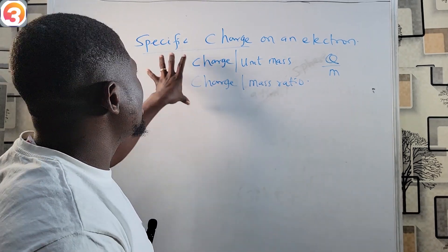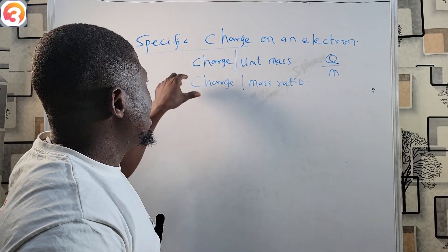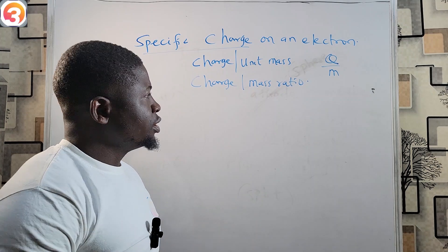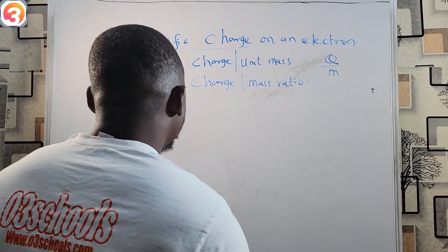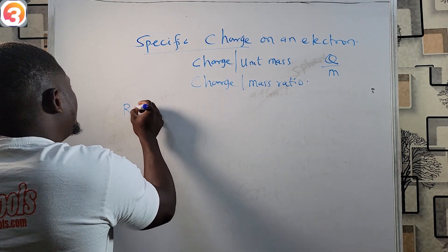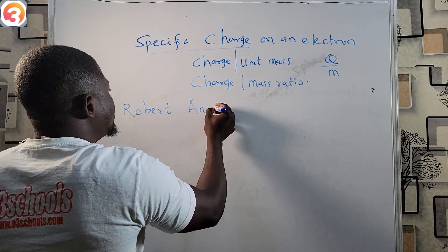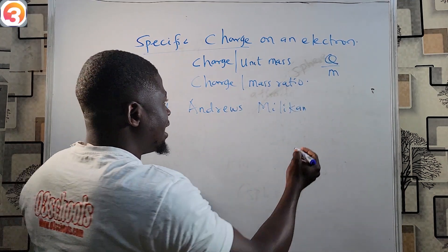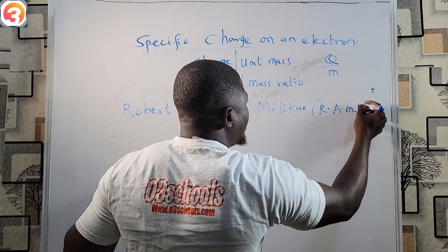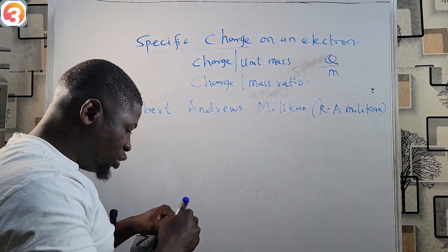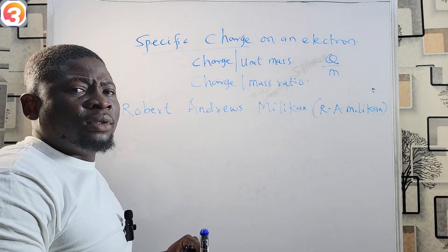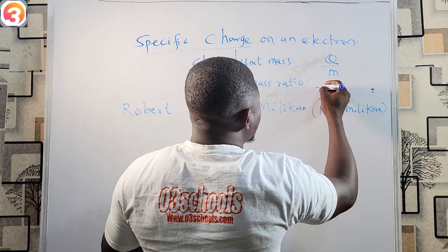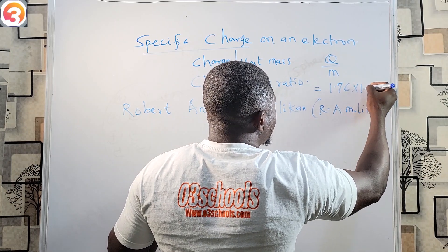JJ Thompson was able to measure the specific charge — the charge per unit mass, or charge-to-mass ratio — on an electron. Robert Andrews Millikan, popularly known as R.A. Millikan, was able to discover the charge on an electron. Meanwhile, JJ Thompson's specific charge on an electron gave the value of 1.76 × 10¹¹ coulombs per kilogram.